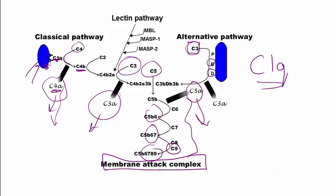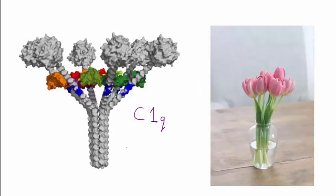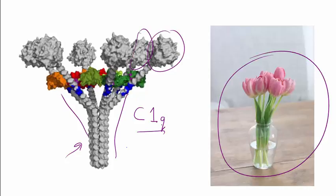Okay, so C1q is a most extraordinary looking molecule. This is an electron microscopic rendering of it. The most obvious thing are these stalks with the bulbs on the end, which is very much like a beautiful bouquet of tulips. There are six of these, and this allows C1q to bind very efficiently to the FC end of IgG, which is what it's designed to do. It can also bind the FC end of IgM.